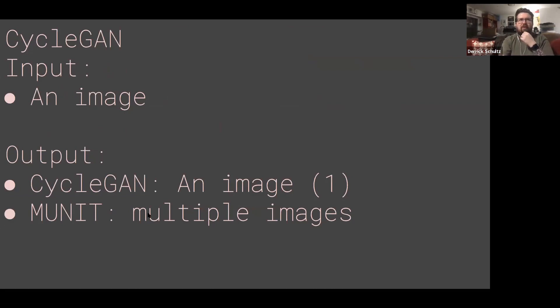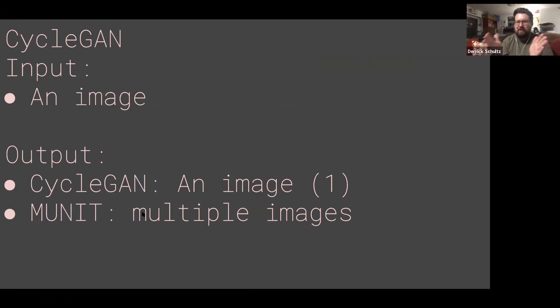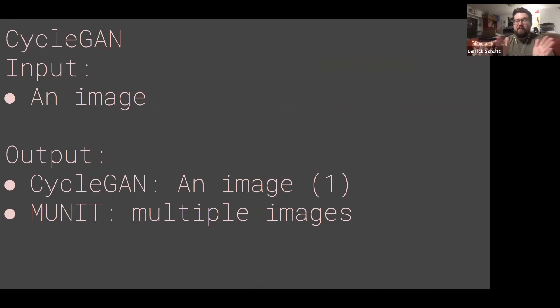What's a bit annoying is that MUNIT calls those multiple images 'styles.' So we now have style transfer, StyleGAN, and then MUNIT styles — which will be very confusing to describe. So if you want to talk about styles with MUNIT, mention MUNIT first, then use the word styles, and it makes a little bit more sense.